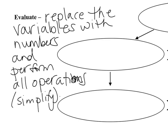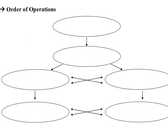The order of operations is important — you do have to go in an exact order. Now you may have heard of an acronym: PEMDAS, GEMDAS, or GEMA. The P or the G stands for parentheses or grouping symbols. I'm going to refer to the first step as grouping symbols. The first thing you have to do is the stuff inside the grouping symbols.